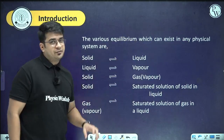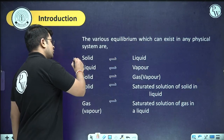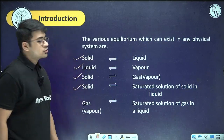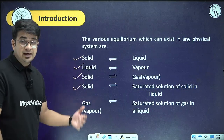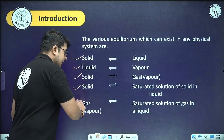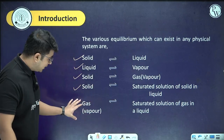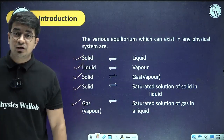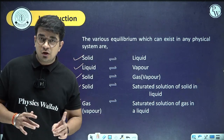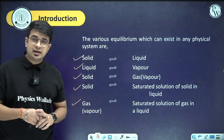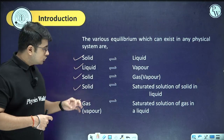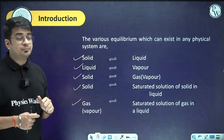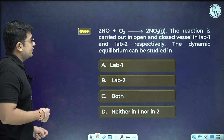For equilibrium in physical state, we have solid to liquid, liquid to vapor, solid to gas, solid to saturated solution of solute in liquid, or gas to saturated solution — which is related to Henry's law covered in the solution chapter. So there are some physical changes where establishment of equilibrium can be observed.